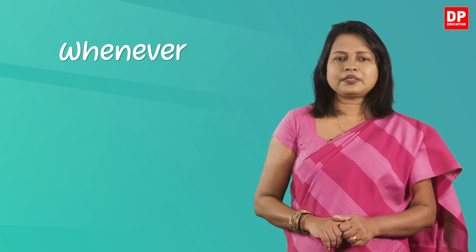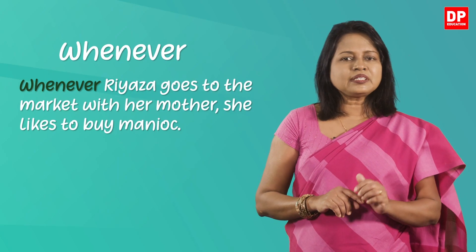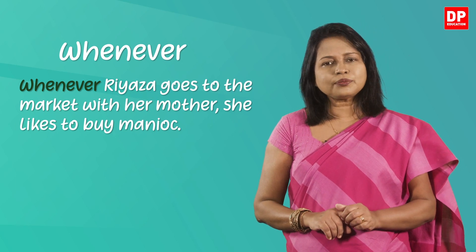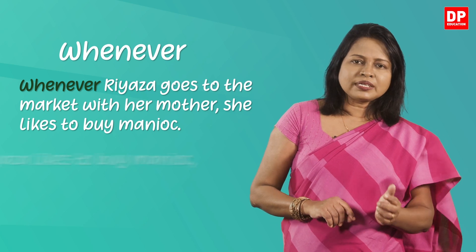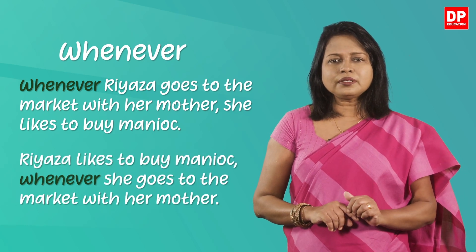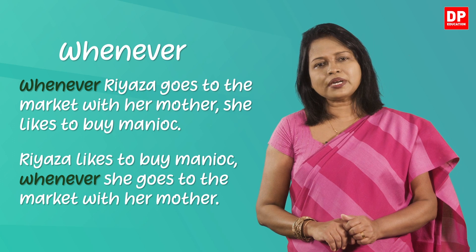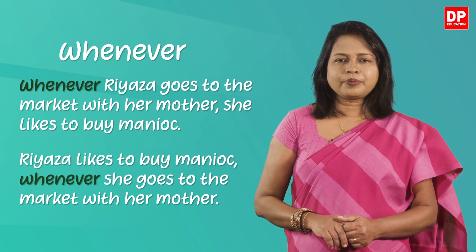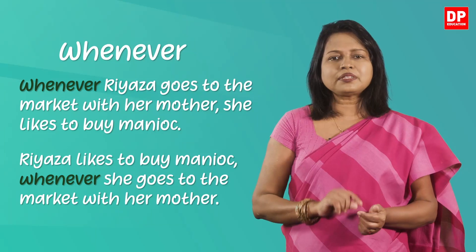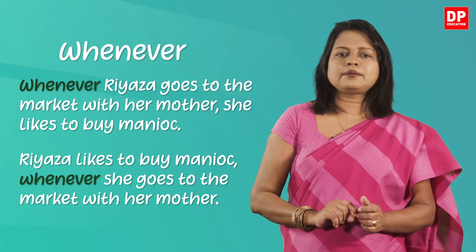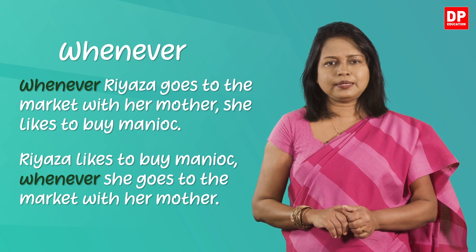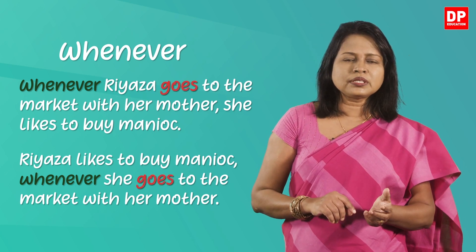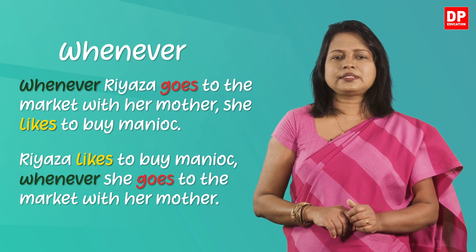This is the last connective we are going to study today: 'whenever'. For example: 'Whenever Riyaza goes to the market with her mother, she likes to buy manioc.' Or: 'Riyaza likes to buy manioc whenever she goes to the market with her mother.' Whenever means 'every time that' or 'any time that'. We often use 'whenever' with the present simple — that's why you have 'goes' and 'likes' in these sentences.